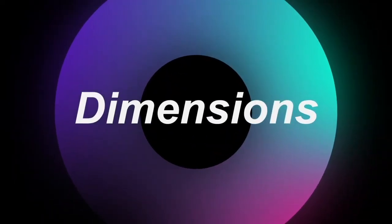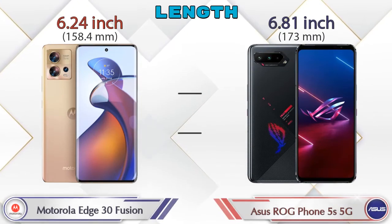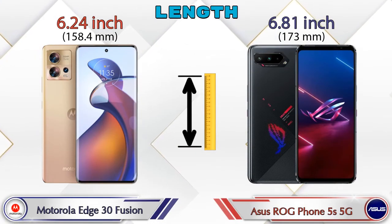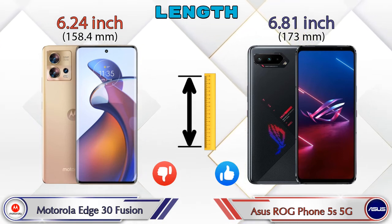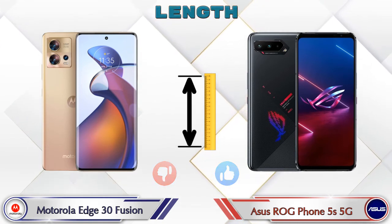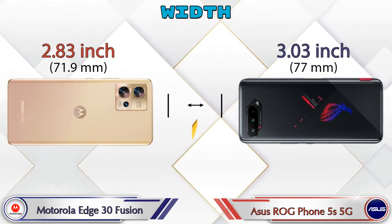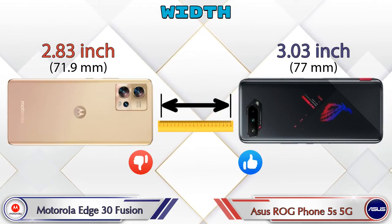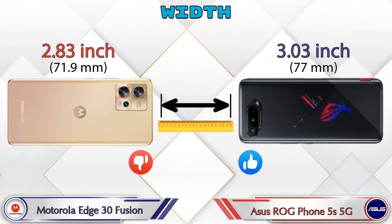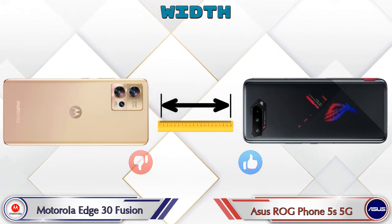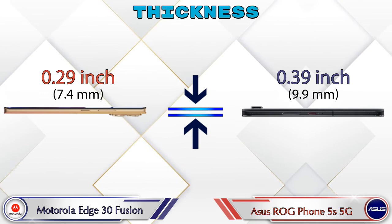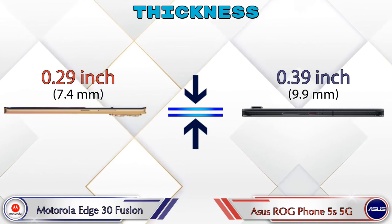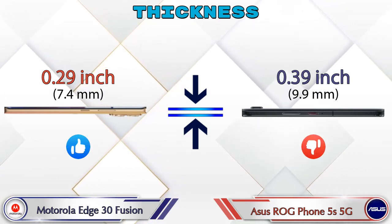Now let's check the dimensions. In terms of length, the Edge 30 Fusion 5G measures 6.24 inches and the ROG Phone 5s 5G is 6.81 inches. In width, the Edge 30 Fusion 5G is 2.83 inches and the ROG Phone 5s 5G is 3.03 inches. For thickness, the Edge 30 Fusion 5G is 0.29 inches and the ROG Phone 5s 5G is 0.39 inches.